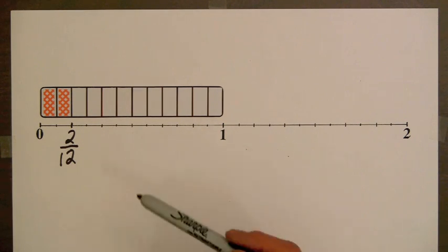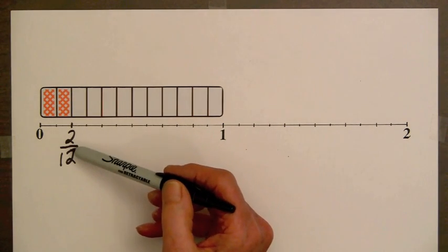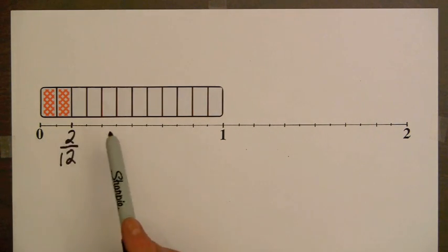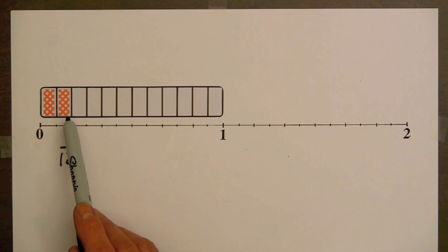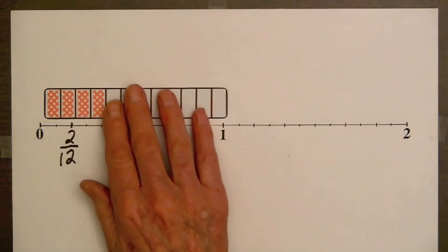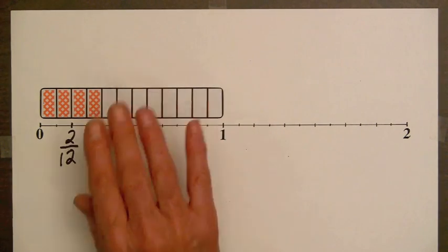Now, a common mistake for some students is to think the fraction for this mark should be 3 twelfths. They count the marks 1, 2, 3. But it's the spaces we need to count, and the shaded amounts of the fraction bars can help us to remember this. So, we can continue to use the shaded amounts of fraction bars to write other numbers between 0 and 1.